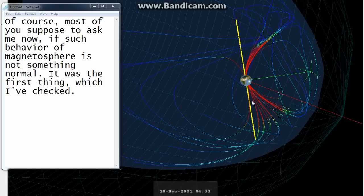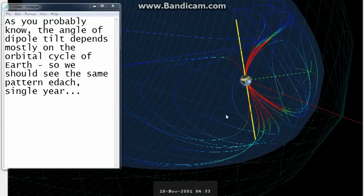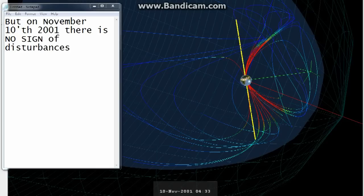Of course, most of you are supposed to ask me now if such behavior of the magnetosphere is not something normal. It was the first thing which I checked. As you probably know, the angle of dipole tilt depends mostly on the orbital cycle of Earth, so we should see the same pattern each single year. But on November 10th, 2001 there is no sign of disturbances.